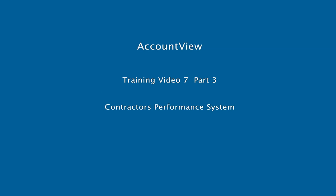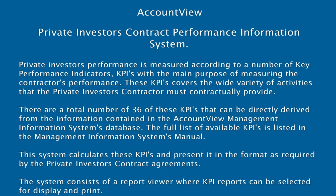Account View Training Video 6, Part 3: Private Investor's Contract Performance Information System. In this session we will discuss the Private Investor's Contract Performance Information System. Private investor's performance is measured according to a number of key performance indicators (KPIs) with the main purpose of measuring the contractor's performance. These KPIs cover the wide variety of activities that the private investor's contractor must contractually provide. There are a total of 36 KPIs that can be directly derived from the information contained in the Account View Management Information Systems database, with the full list available in the Management Information Systems manual. The system calculates these KPIs and presents them in the format required by the Private Investor's Contract Agreements, consisting of a report viewer where KPI reports can be selected for display and print.